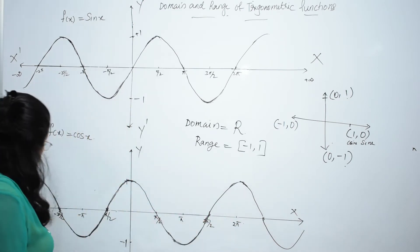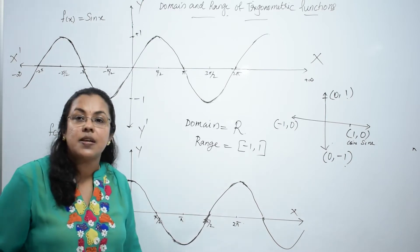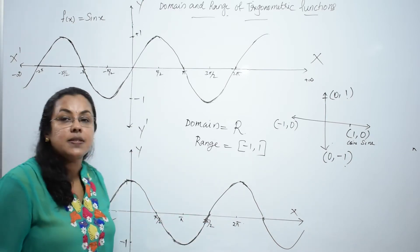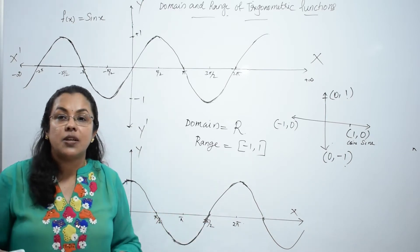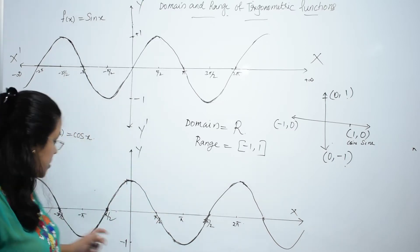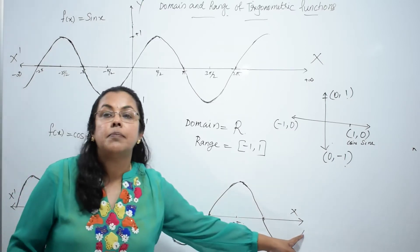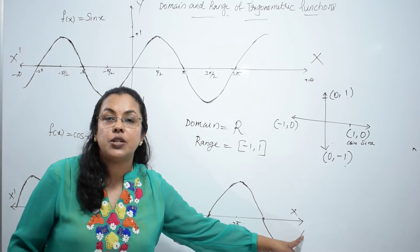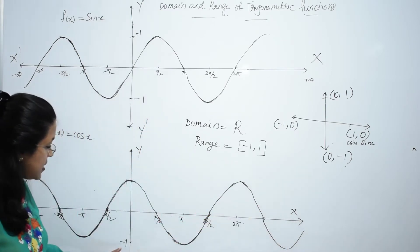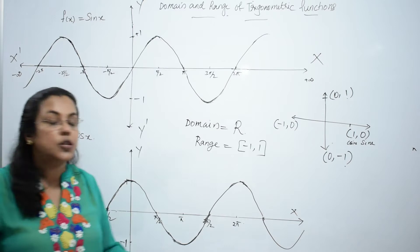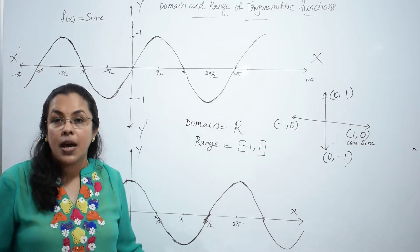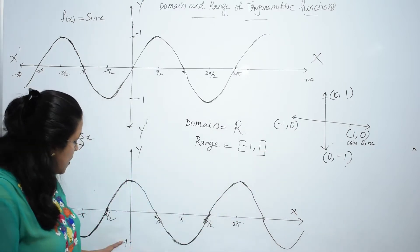Look at the x-axis and y-axis — the x-axis gives the domain and y-axis gives the range. From the graph, it is very easy to understand. The domain is from minus infinity to plus infinity, and the range is again from minus 1 to plus 1. The maximum value is plus 1 and the minimum value is minus 1.